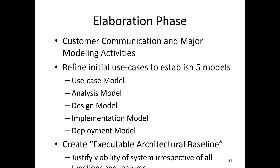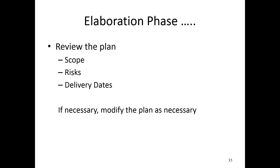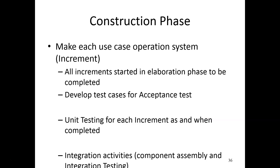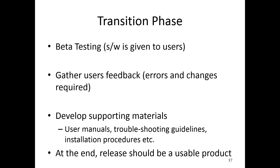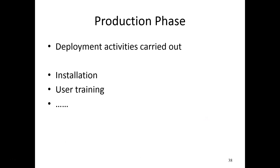In the elaboration phase you implement an executable architecture baseline and review the plan — checking whether it is correct, reviewing risks, identifying deliverable dates, and making modifications if needed. The construction phase: each use case is made operational, all increment phases are completed, and you develop test cases for acceptance testing. Unit tests and integration activities are carried out. Transition is like beta testing — you give the software to a small number of people, test the model, and gather user feedback. Errors can be fixed, and user manuals and installation procedures are developed. Finally you have a releasable product.